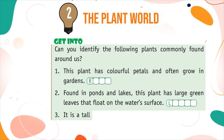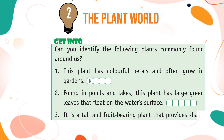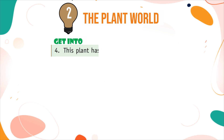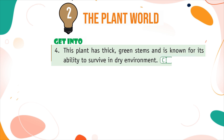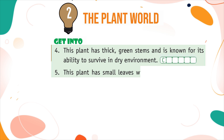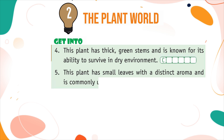It is a tall and fruit-bearing plant that provides shade on sunny days. This plant has thick green stems and is known for its ability to survive in dry environments. This plant has small leaves with a distinct aroma and is commonly used in cooking.